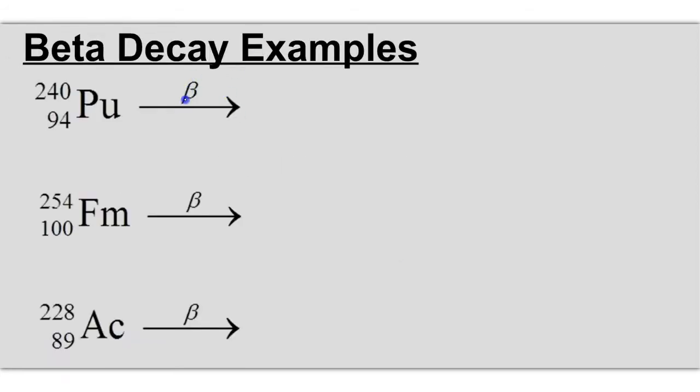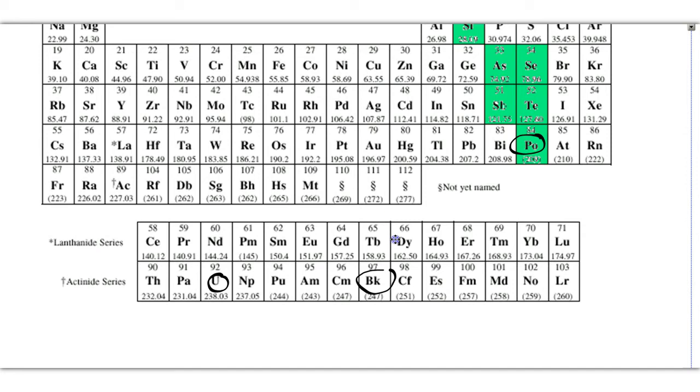Here's our beta decays. The beta over the arrow represents that a beta decay occurs, and thus a beta particle is lost. So we're going to write the symbol for a beta particle, which is 0 over negative 1 E for electron, plus, and then we're going to look at 240 minus 0 equals 240. 94 minus a negative 1, which means plus 1, is going to equal 95. And element number 95 is AM, americium.